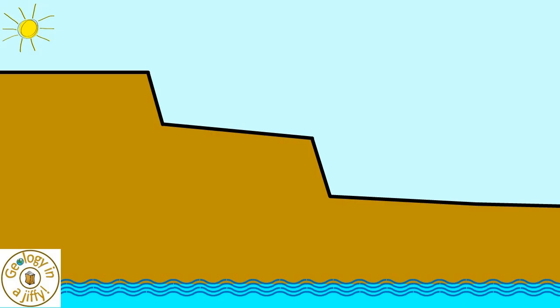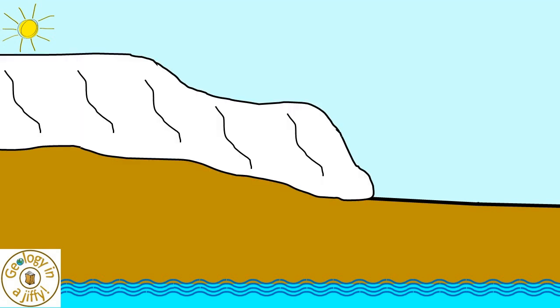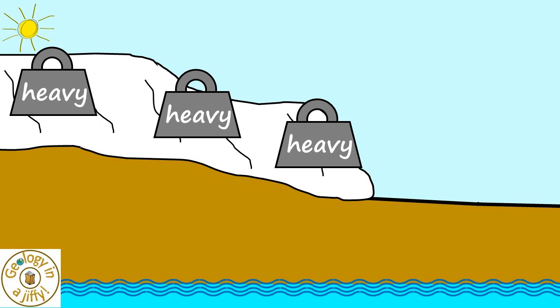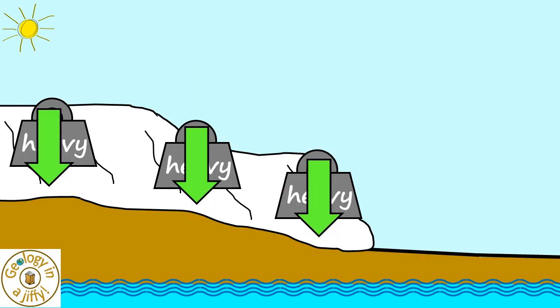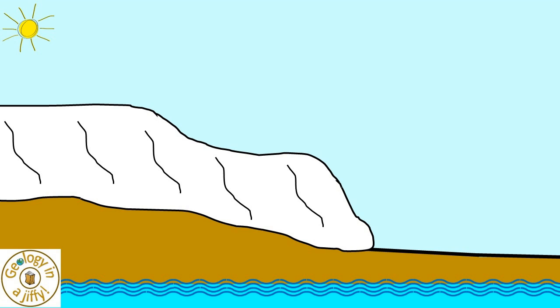Let's imagine our landmass has a glacier carved across it. The glacier is very heavy and so it pushes the continental landmass downwards, leaving the land depressed.